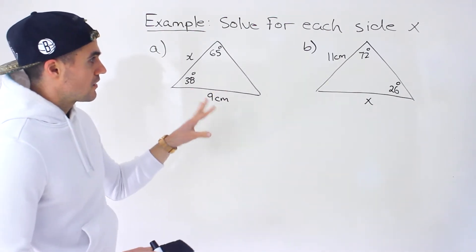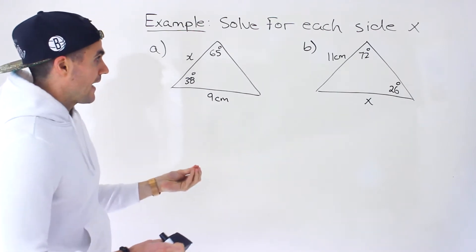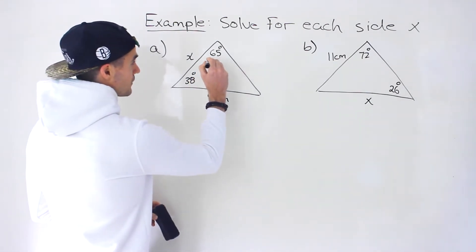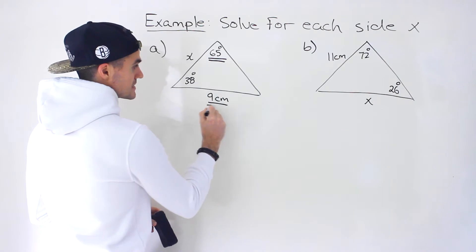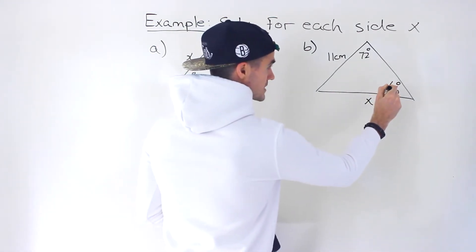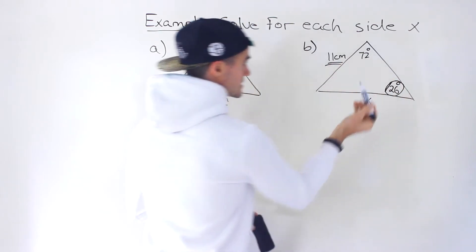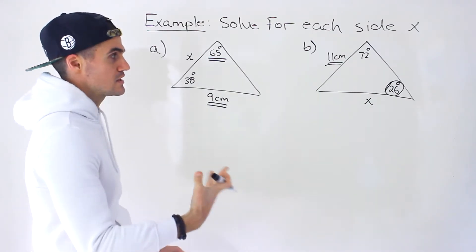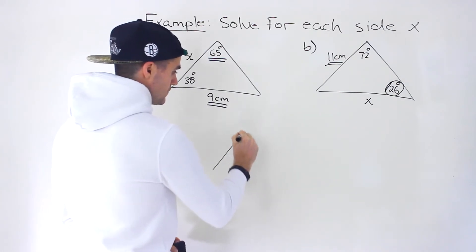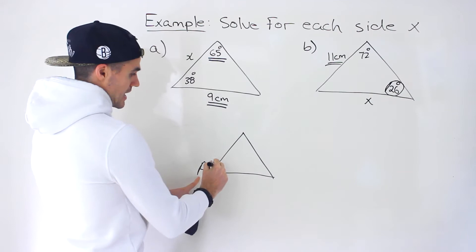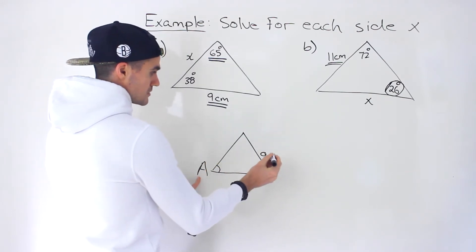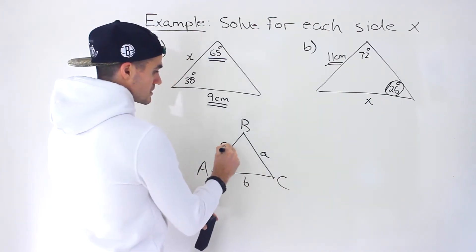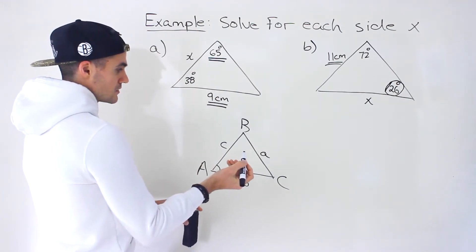Notice that both of these are non-right angle triangles. Also notice that for both of them you are given a set of circumstances where you have an angle and then the opposite side to that angle. Same thing here — we have this 26 degrees and then we have the opposite side to that 26 degrees.